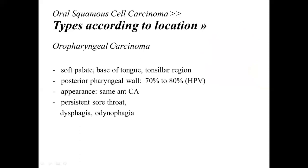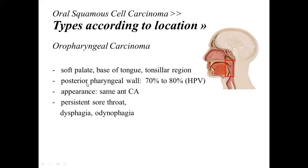Next we have oropharyngeal carcinoma, which occurs on the palate, base of tongue, and tonsils — those located at the back. If oropharyngeal carcinoma occurs on the posterior oropharyngeal wall, 70% to 80% of the time it can be attributed to HPV (human papilloma virus). It is often difficult to see, which is why late diagnosis is common. Patients presenting with persistent sore throat, dysphagia (difficulty swallowing), and odynophagia (pain upon swallowing) should be checked for oropharyngeal carcinoma.